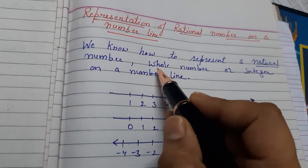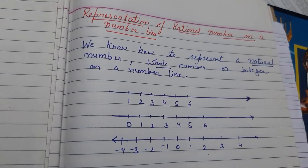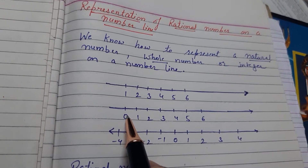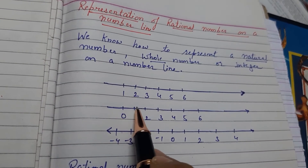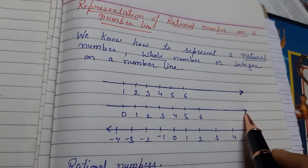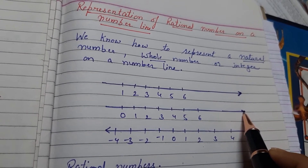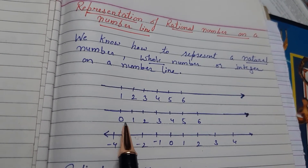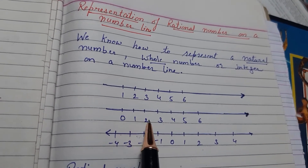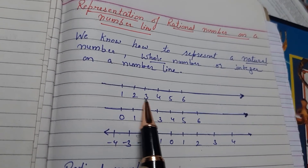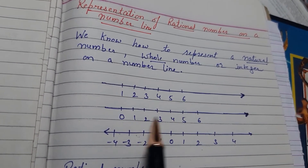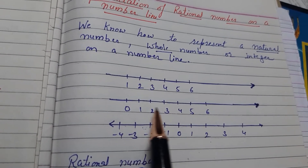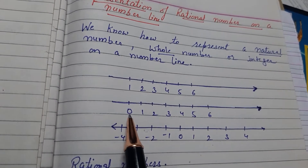Next, if I want to represent a whole number — whole numbers start from 0. So the whole number starts from 0, and it can be represented on a number line which will move towards the right hand side only. It starts from 0, 1, 2, 3, 4 and so on. Same way we will represent the whole numbers here with equal distance, starting from 0.